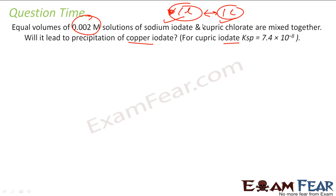If you see, the volume is doubled. Since the volume is doubled, the molarity will become half. The number of moles of sodium iodide is same but the volume is double, so this will become half. The molarity of sodium iodide will be equal to 0.002 by 2, which is 0.001. And similarly, molarity of cupric chloride CuCl2 will also be 0.001. Because the volume is doubled now.